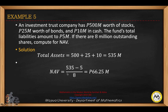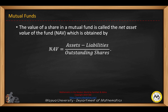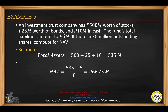The net asset value is the assets minus liabilities, divided by the outstanding shares. So, $535 million minus $5 million in liabilities, divided by 8 million outstanding shares. That gives you a net asset value of $66.25 per share.